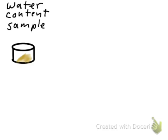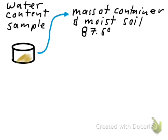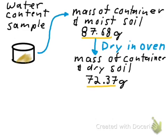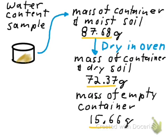Let's look at our water content sample. It's a smaller sample taken out of the cylindrical sample and placed in a different container. We determine the mass of the container and the moist soil by putting it on the scale — that turns out to be 87.68 grams. We then put the entire sample and container in the oven overnight to dry. The next morning, we pull it out and measure the mass of the container and dry soil, which is 72.37 grams. We also need the mass of the empty container, which was measured at the beginning of the test — that's 15.66 grams.